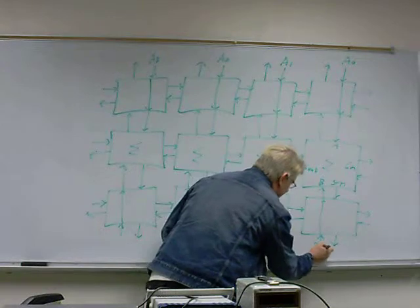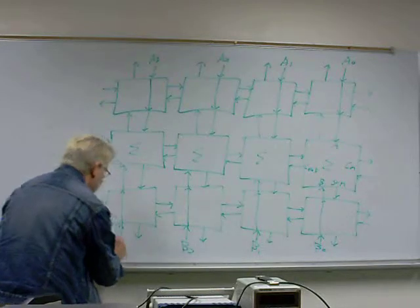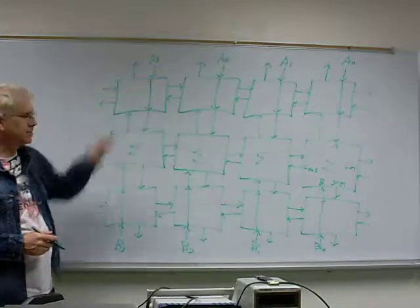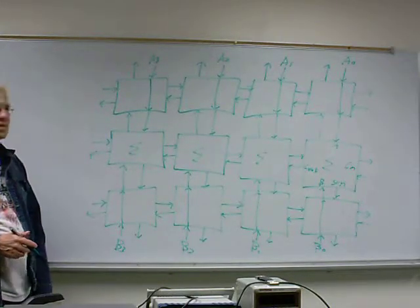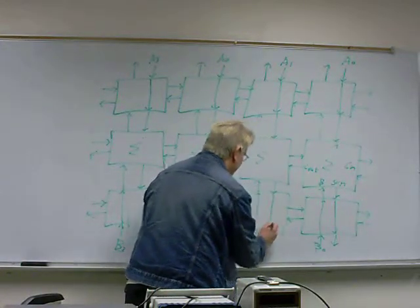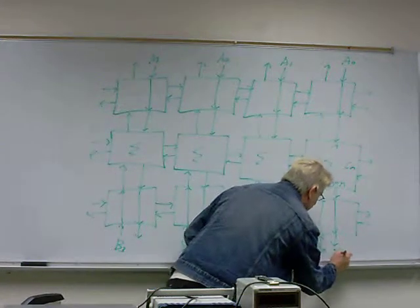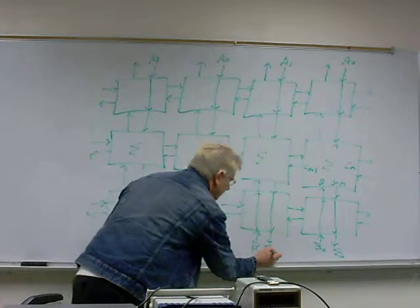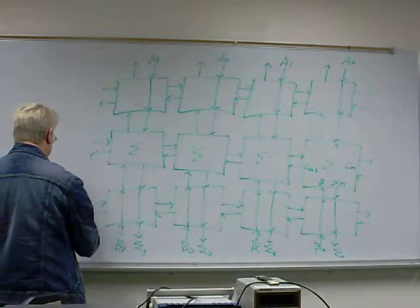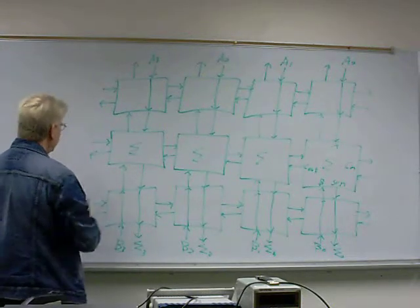Similarly, I might take the lower row of cells and tell them to copy data from south to north, then feed in my second number B into those inputs. So B0 through B3 comes in from the south. Now I have an adder circuit: one number in the top, one number in the bottom, and the sum bits come out of the south of the adders. I would also tell the lower row to copy data from north to south, giving me sum bits zero through three, and the final carry-out from the last stage.